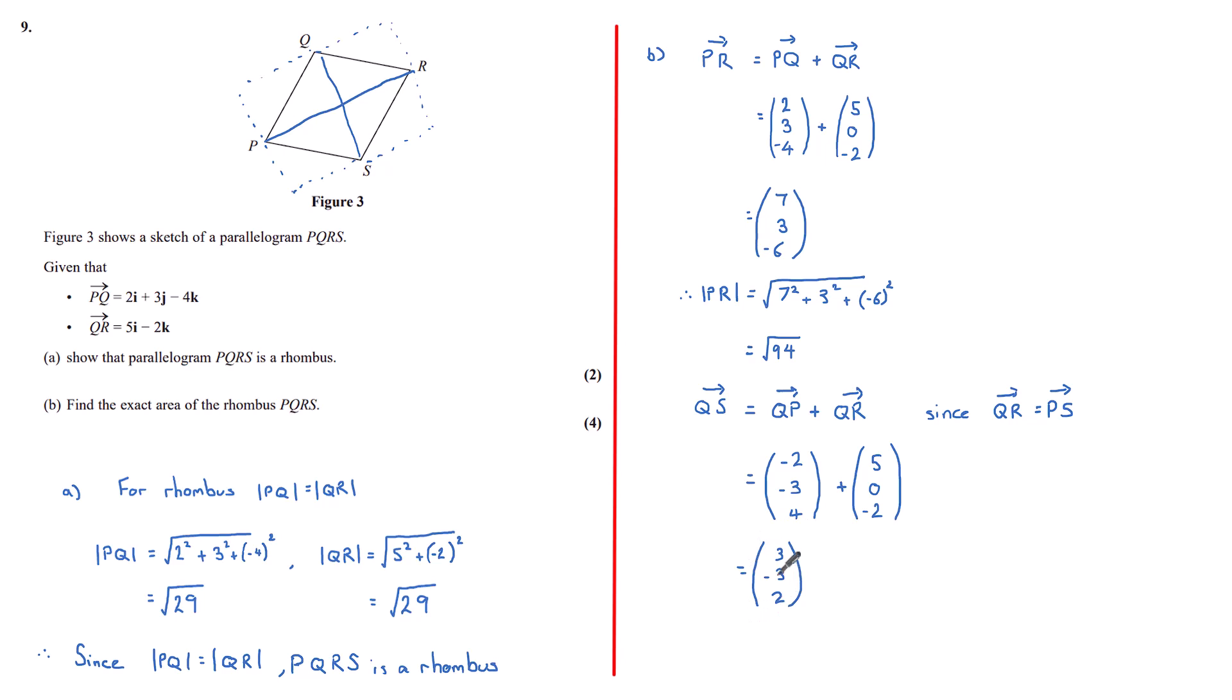So the length QS is the modulus, which is the square root of 3 squared plus minus 3 squared plus 2 squared, and we get a value of root 22.